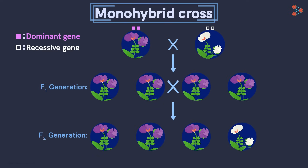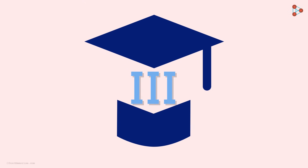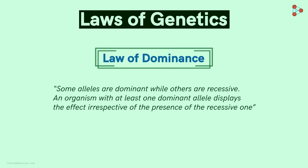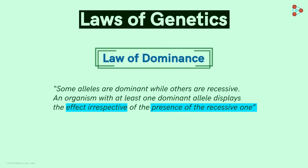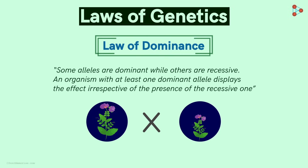After the monohybrid cross, Mendel concluded that a few genes are dominant while others are recessive. The third law of genetics, known as the Law of Dominance, states that some alleles are dominant while others are recessive. An organism with at least one dominant allele displays the effect irrespective of the presence of the recessive one. Let's consider a cross of a tall and a dwarf plant. The tall plant has both dominant alleles represented as TT, while the dwarf plant has both recessive alleles represented as tt in lowercase.